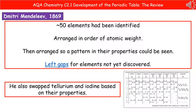The third scientist we need to remember is Dmitry Mendeleev, who carried out his work in 1869. By this point, around 50 elements had been identified. When he put his periodic table together, he arranged them in order of atomic weights, but he also arranged it so a pattern in their properties could be seen. The key difference is that when something didn't fit, he didn't just fill it in like Newlands did — he actually left gaps for elements that hadn't been discovered yet. He also realized some elements didn't fit where they'd fall based on atomic weight, so he swapped them around. A good example is tellurium and iodine, because their properties suited them better the other way around.